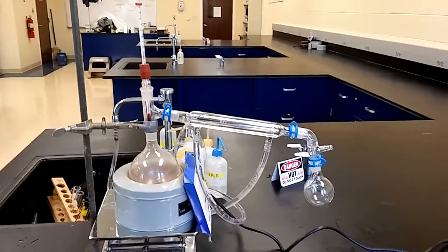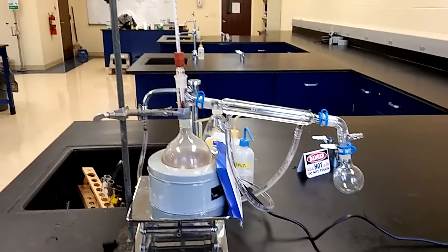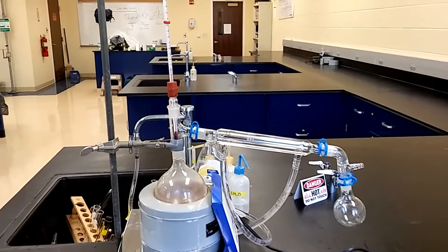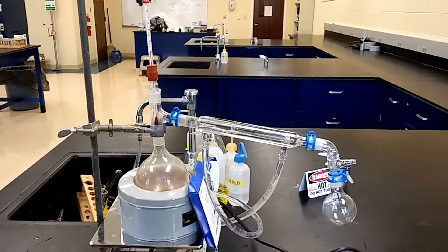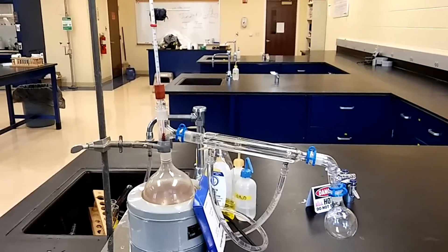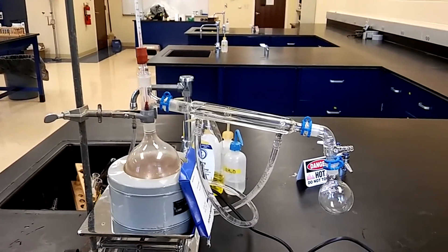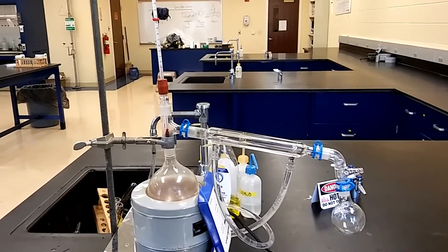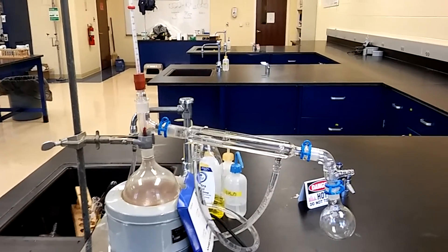Now, N-butyl acetate distills around 124 to 126. So, I'm going to collect anything that comes before 120, and probably collect anything that comes after 124. But 124 to 126 is the boiling point of N-butyl acetate. I'll probably throw in another flask when I'm ready to collect the actual product. I'm going to collect everything that comes before around 120 or so, and then collect everything that comes after.